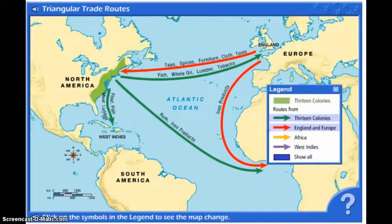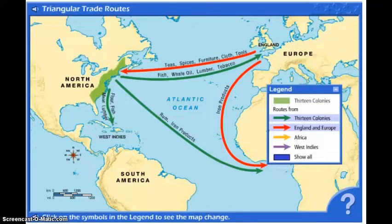You can notice, leaving England and headed back to the colonies are teas, spices, furniture, cloth, and tools. And the thing you'll notice here — these are manufactured items primarily.